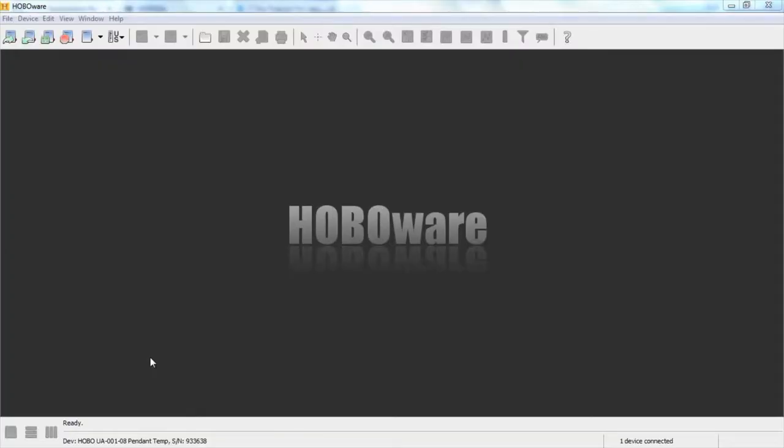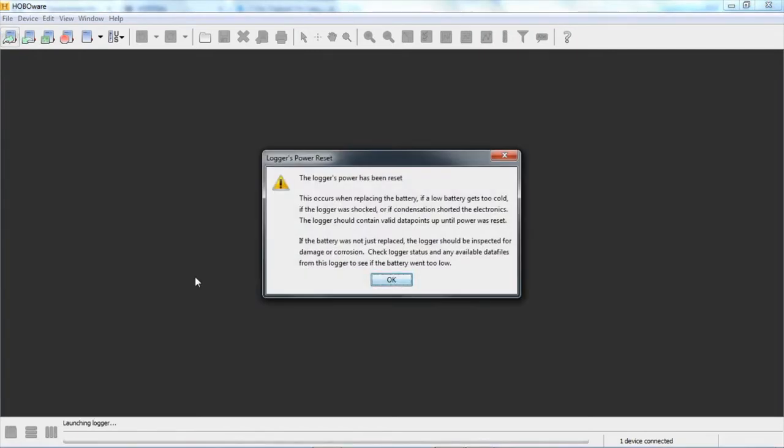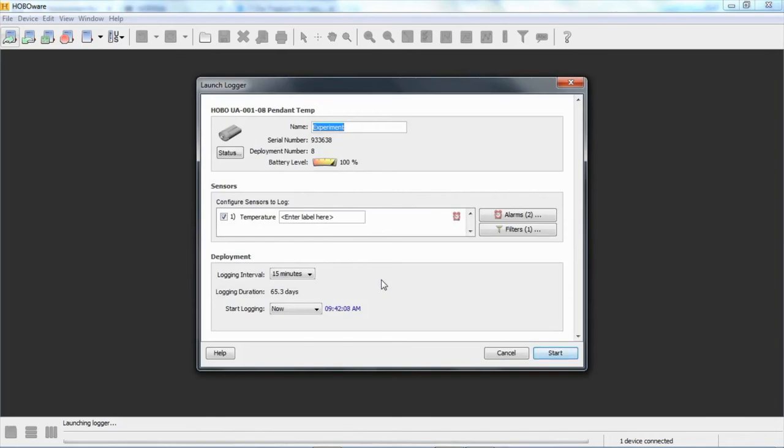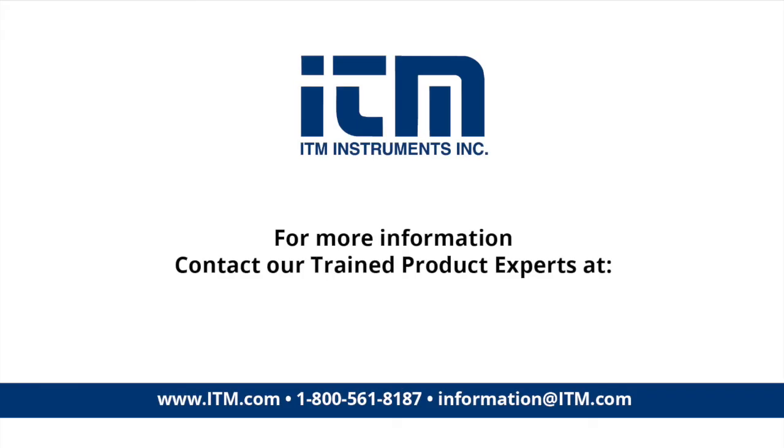One last note after changing a battery. You will get a notification in HoboWare the first time you launch it that the battery power has been reset which is completely normal. So if we go into the launch screen you'll see the logger's power has been reset. Well, yes. And again, it says this occurs when replacing the battery. So, perfectly normal once you launch the logger this message goes away. We go into our launch screen and configure the logger for our next deployment.